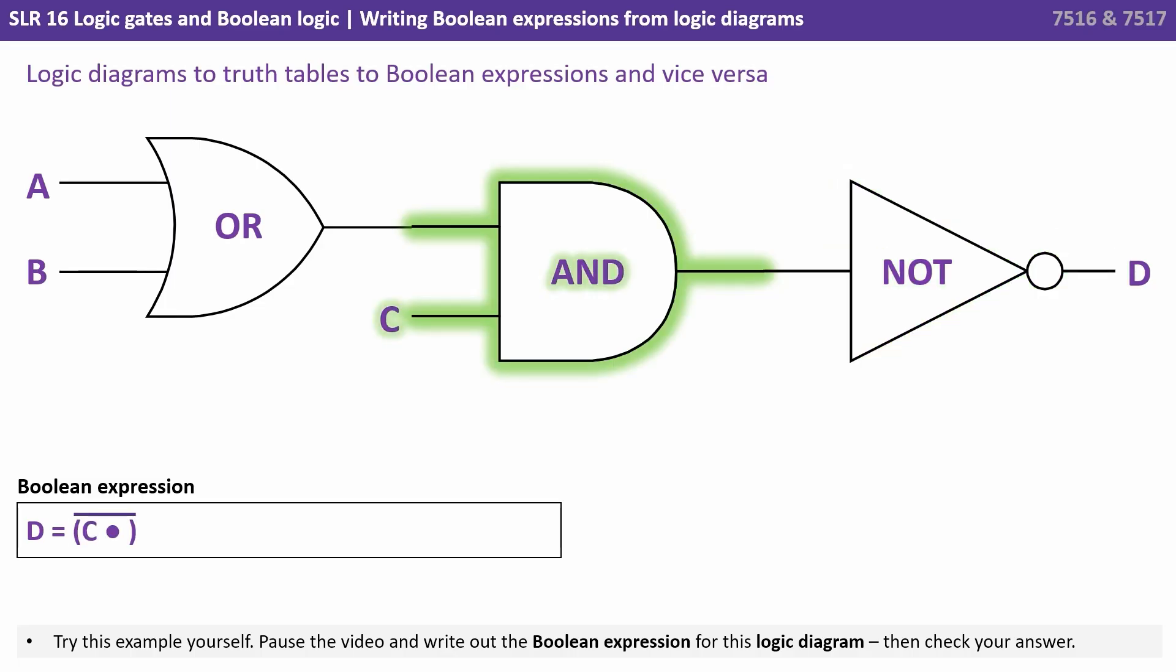We then see we have an AND gate. So we've got NOT C AND something. And that something is being supplied by the other gate which we haven't written out here yet.